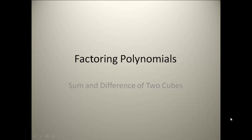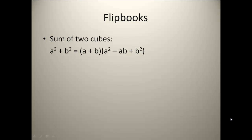We're going to look at factoring polynomials using the sum and difference of two cubes. You will need your flipbook for these. In the first column of your flipbook, you should see a³ + b³. This is called the sum of two cubes because we have a plus sign, which indicates a sum, and the two cubes means we have a quantity to the third power and a second quantity to the third power. On the a³ + b³ tab, you need to write this formula down because this is how we're going to factor the sum of two cubes.